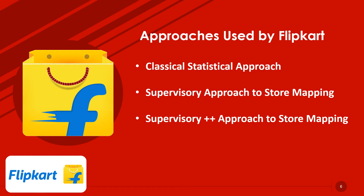This approach largely depends on data and works well with categories that are common, popular, and well known among users. A product belonging to a niche category may not have a lot of query data, and hence the store-to-query mapping may be less probable in such cases. The challenges with this approach are: first, it works on the exact query; second, it memorizes the query allowing no room for generalization; and finally, it lacks query volume or click data in a niche or unpopular vertical.